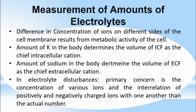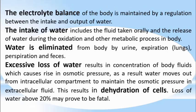The difference in concentration of ions on different sides of the cell membrane results from metabolic activity of the cell. The amount of potassium in the body determines the volume of intracellular fluid as the chief intracellular cation. In electrolyte disturbance, the primary concern is the concentration of various ions and the interrelation of positively and negatively charged ions with one another. The electrolyte balance of the body is maintained by regulation between the intake and the output of water — it is water that plays an important role in maintaining electrolyte balance.